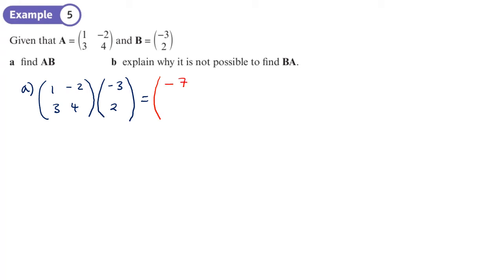The last element — the bottom row: 3 times negative 3 = negative 9, plus 8 = negative 1. That's it. Part b asks: why is B times A not possible?